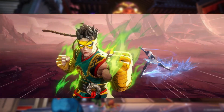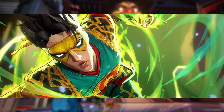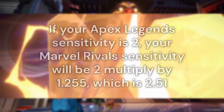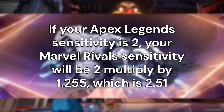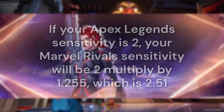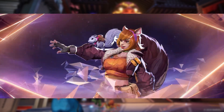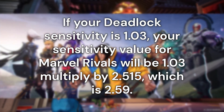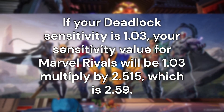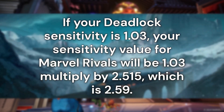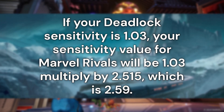Those coming from Apex Legends should multiply their sensitivity by 1.255. This means that if your Apex Legends sensitivity is 2, your Marvel Rivals sensitivity will be 2 multiplied by 1.255, which is 2.51. Deadlock players use a factor of 2.515. If your Deadlock sensitivity is 1.03, your Marvel Rivals sensitivity will be 1.03 multiplied by 2.515, which is 2.59.